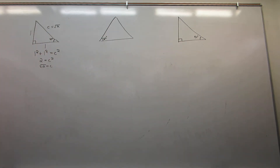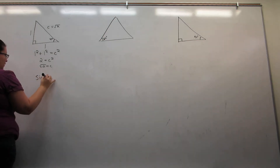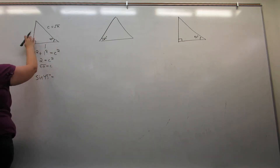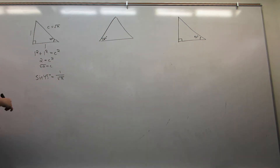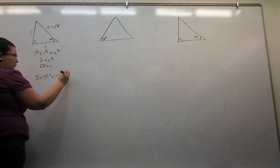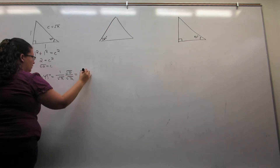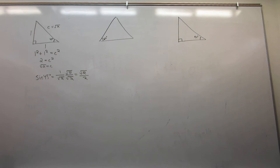From here I can determine all six trigonometric functions of the angle 45 degrees, but as we already know, if I know sine and cosine I know all the rest. So the sine of 45 degrees is opposite over hypotenuse, 1 over the square root of 2. As is typical we don't like to leave square roots in the bottom, so I'm going to rationalize the denominator and get that the sine of 45 degrees is square root of 2 over 2.